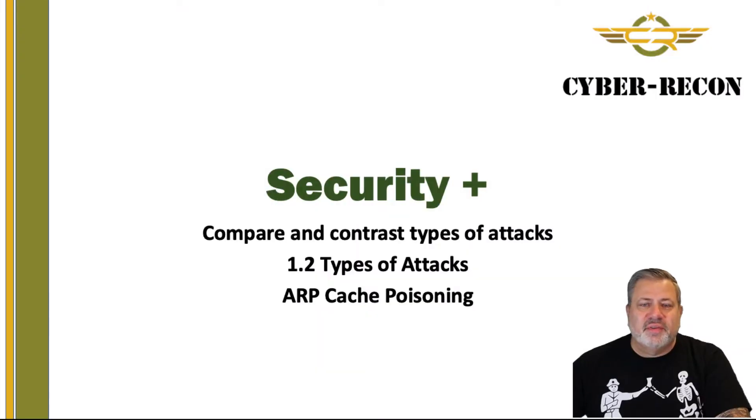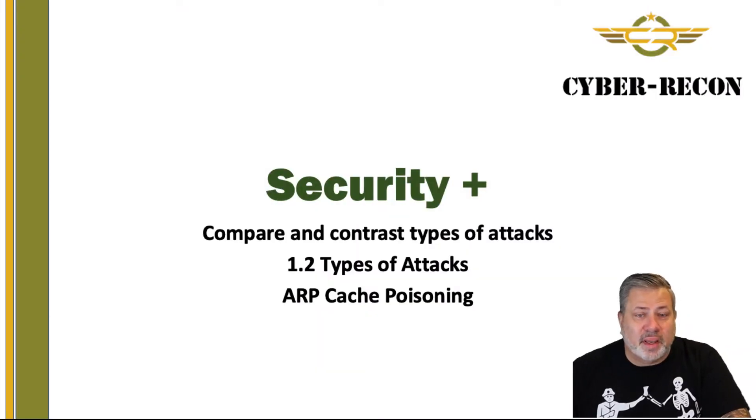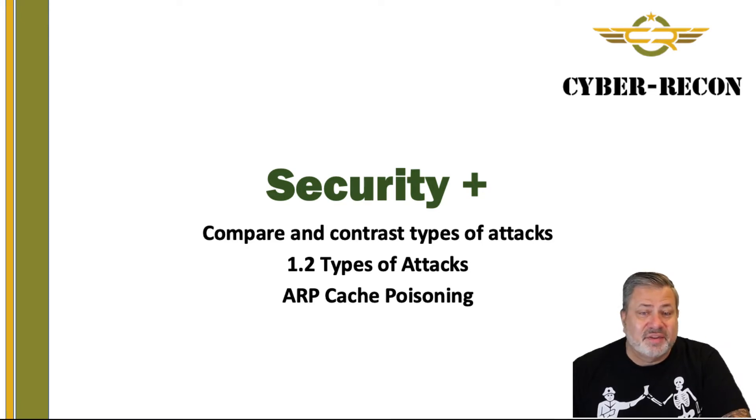Hi, it's Jim, and we're talking more about the Security Plus exam and what we can do to get through this thing. Talking about types of attacks, and specifically this morning we're going to jump in and talk about an attack called ARP cache poisoning. This is part of domain 1, subdomain 1.2, types of attacks.